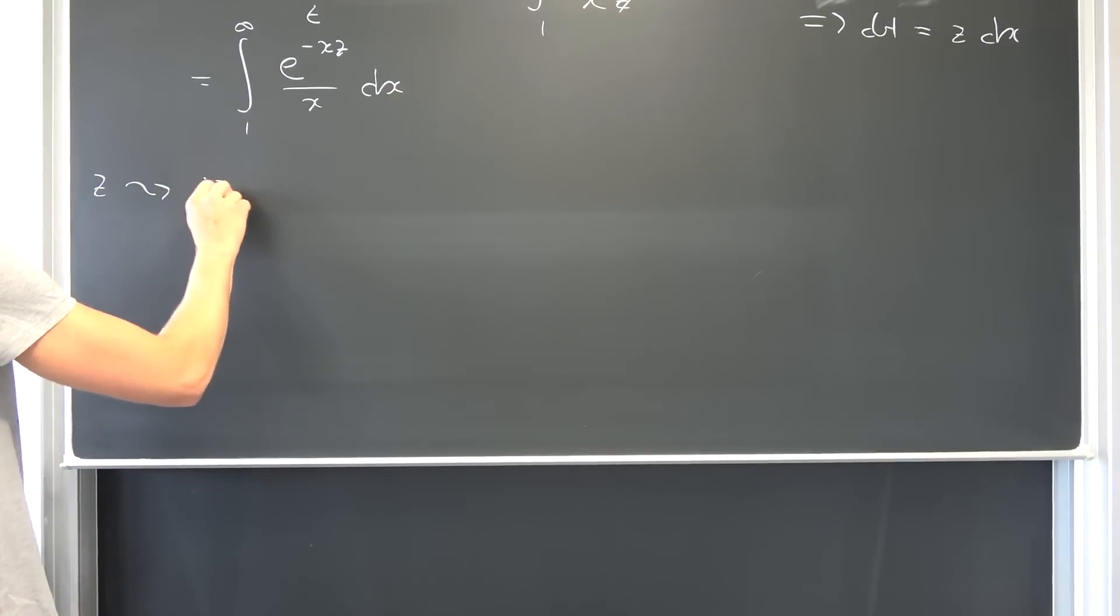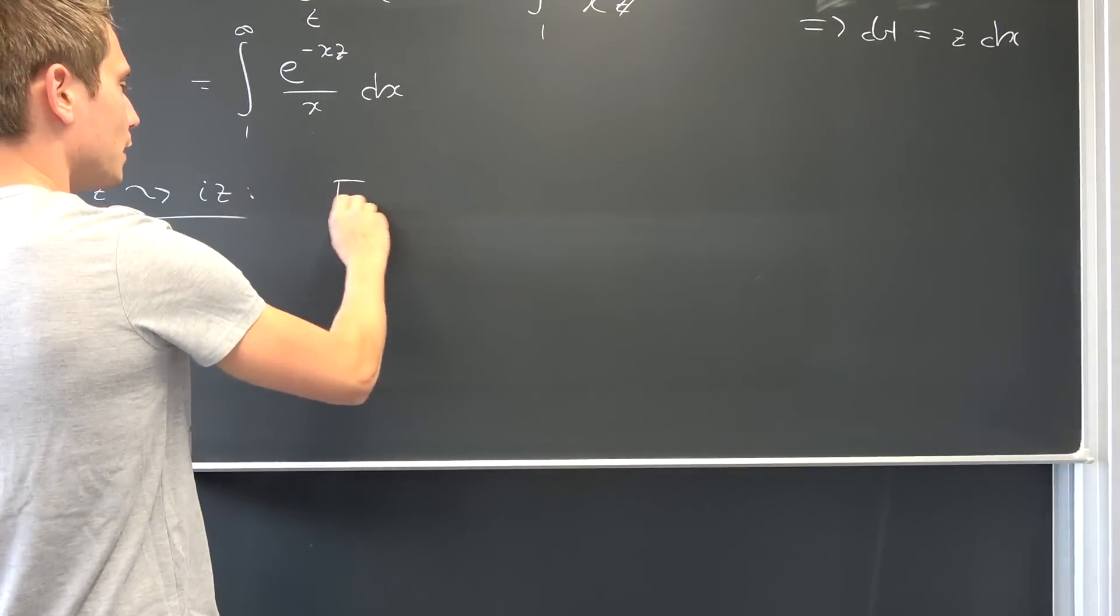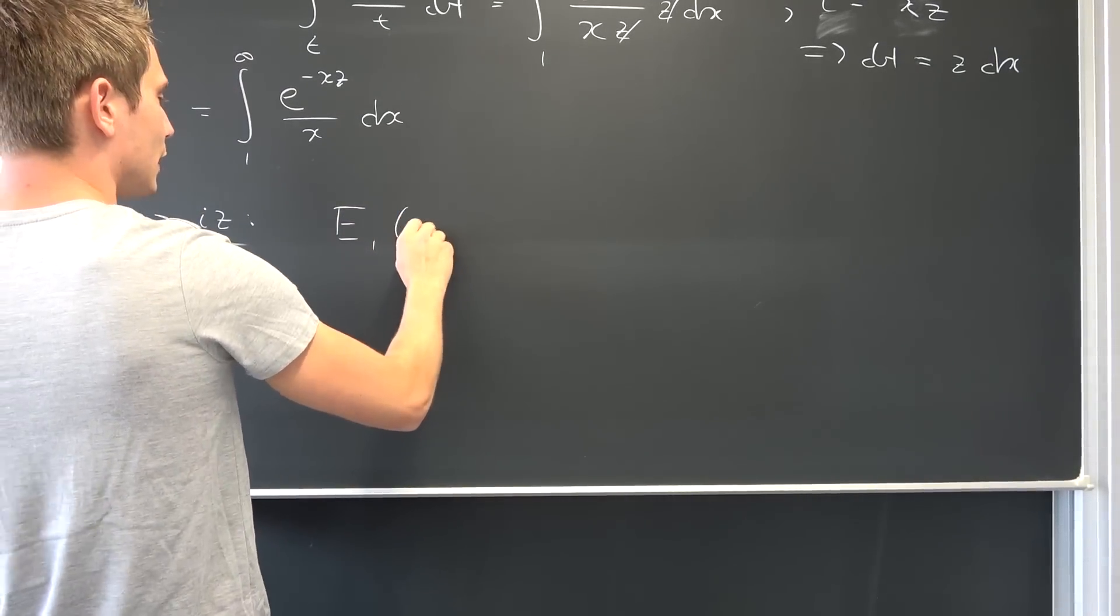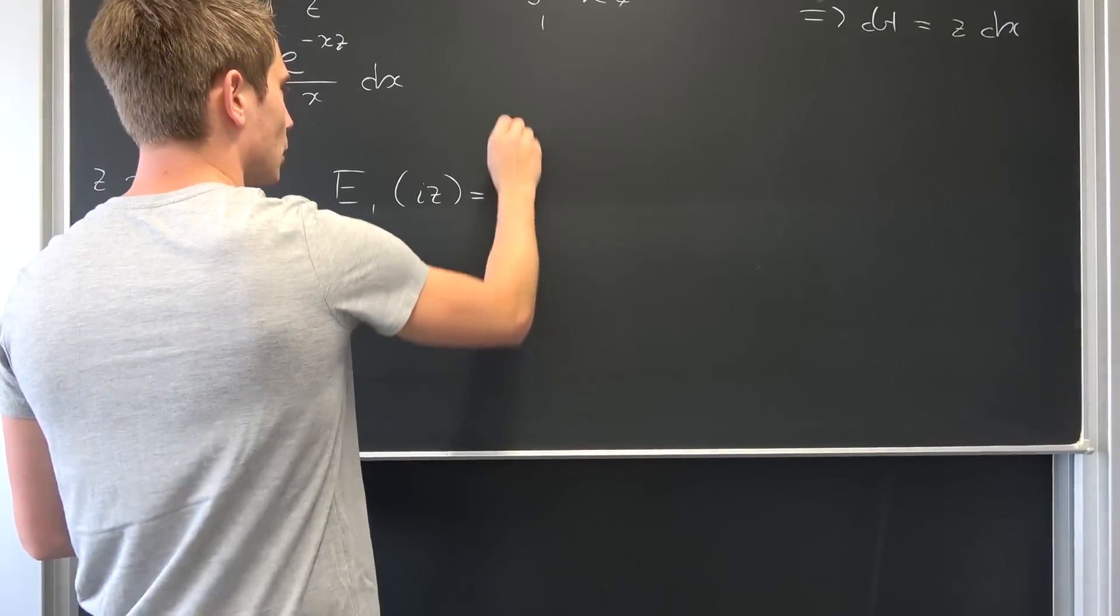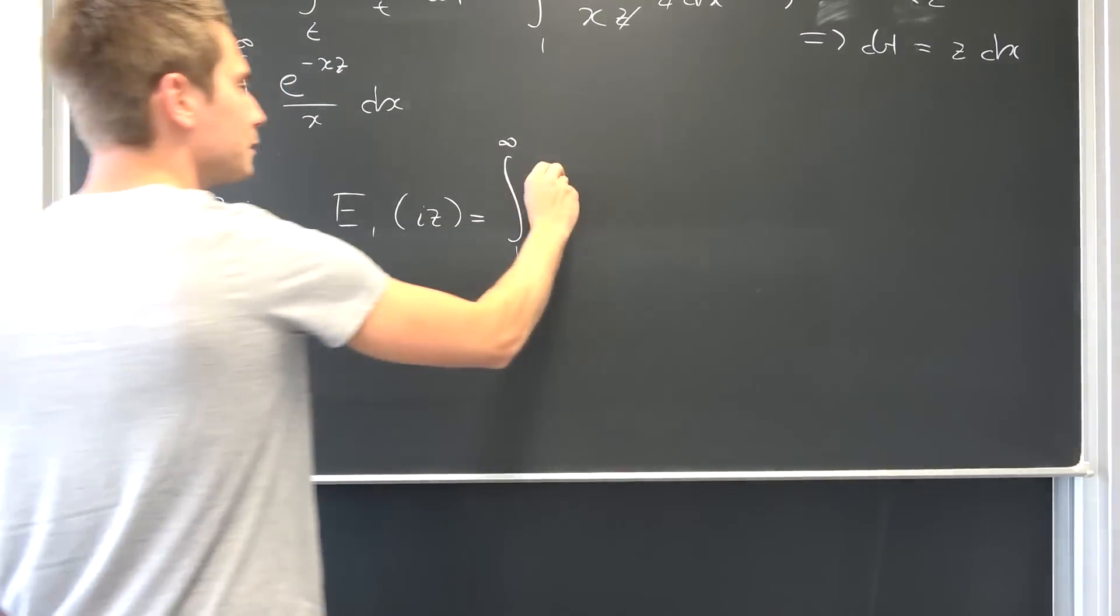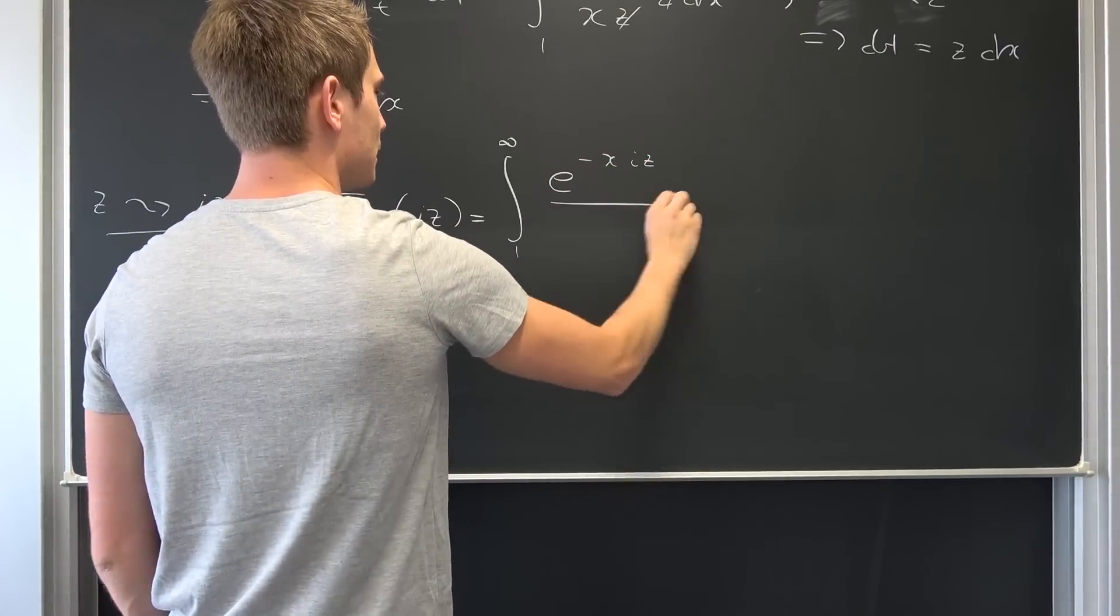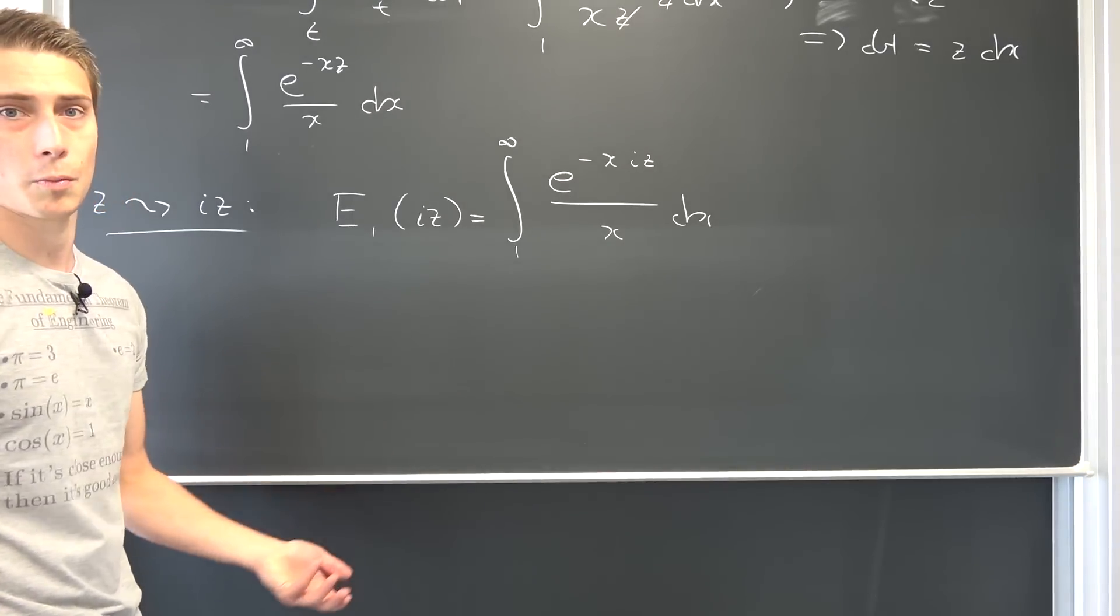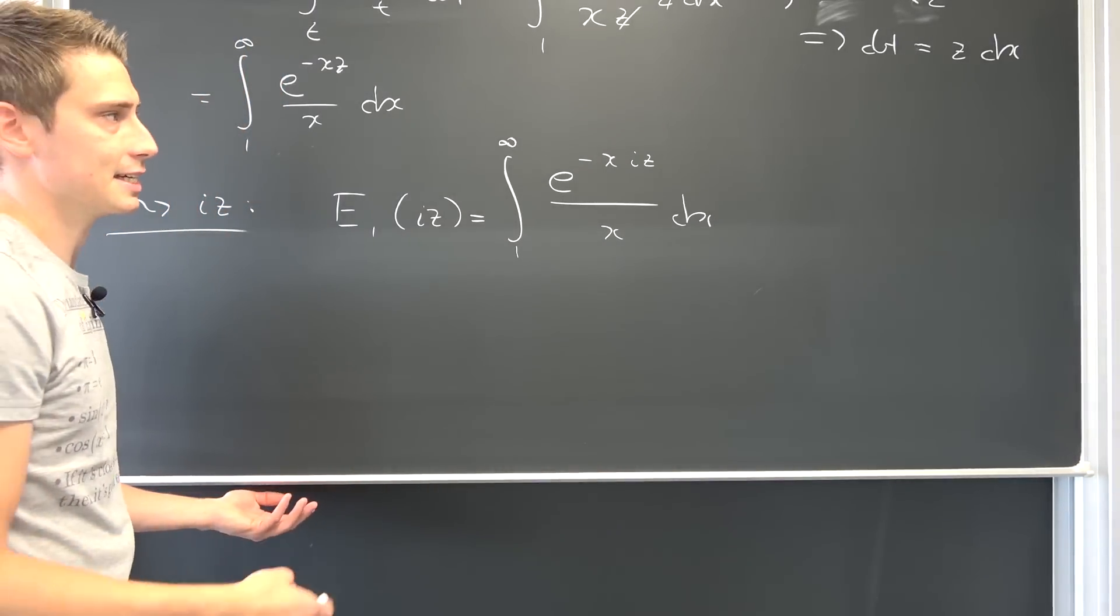z is going to be transformed to i times z. Leaving us with, if we plug this in, on the one hand, that's the equivalence relation, so we have e1 of i times z, being thus nothing but the integral from 1 to infinity of e to the negative x i times z over x dx. And now we can make use of Euler's formula. No need to do Wick rotation, for example. It's as easy as it is.